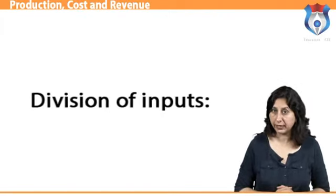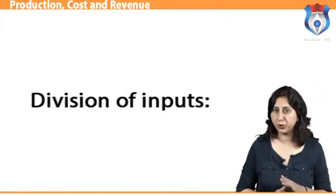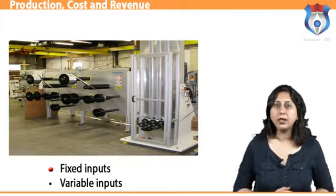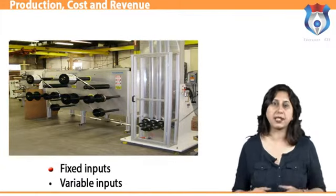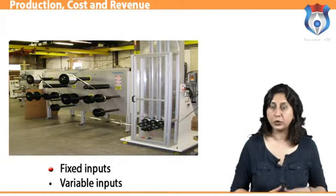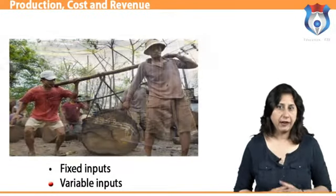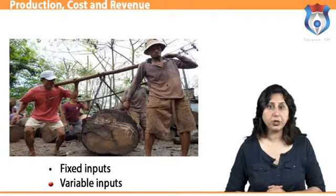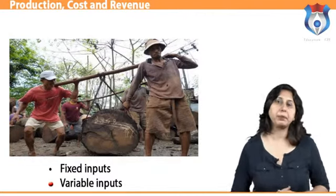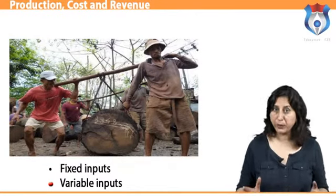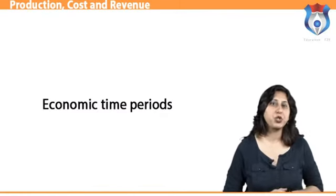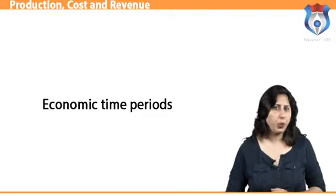Another important distinction is about the division of inputs into two categories: fixed input and variable input. A fixed input is one whose quantity cannot be varied during the time under consideration; inputs classified as fixed inputs include plant and equipment of the firm. A variable input is one whose amount can be changed during the relevant period — for example, in the construction business, the number of workers can be increased or decreased on short notice.